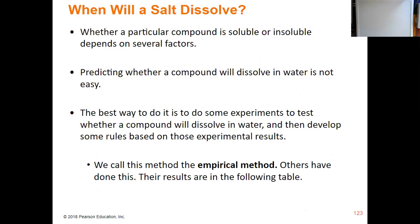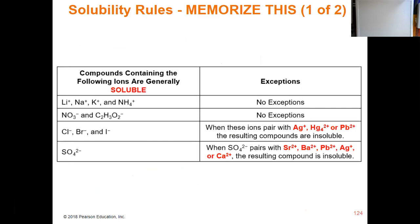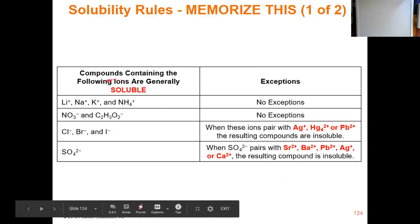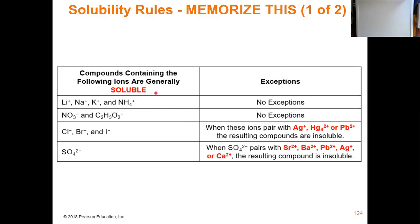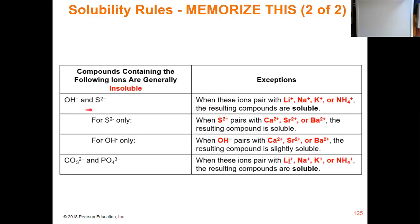The best way to figure out if something is going to dissolve or not is to test it out. Many others have done this, and you have to be comfortable with the results — you need to memorize the next two tables to tell whether an ionic compound will be soluble or stay solid. Table one covers compounds that are usually soluble, with exceptions. Table two covers four types of compounds that are usually insoluble, with exceptions.